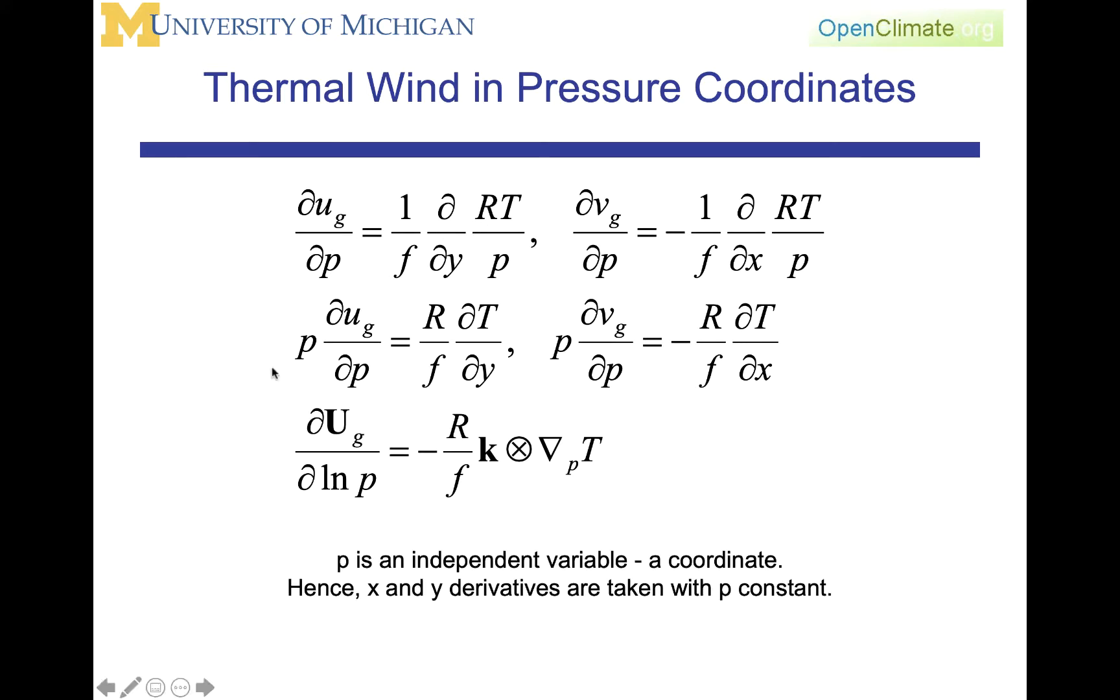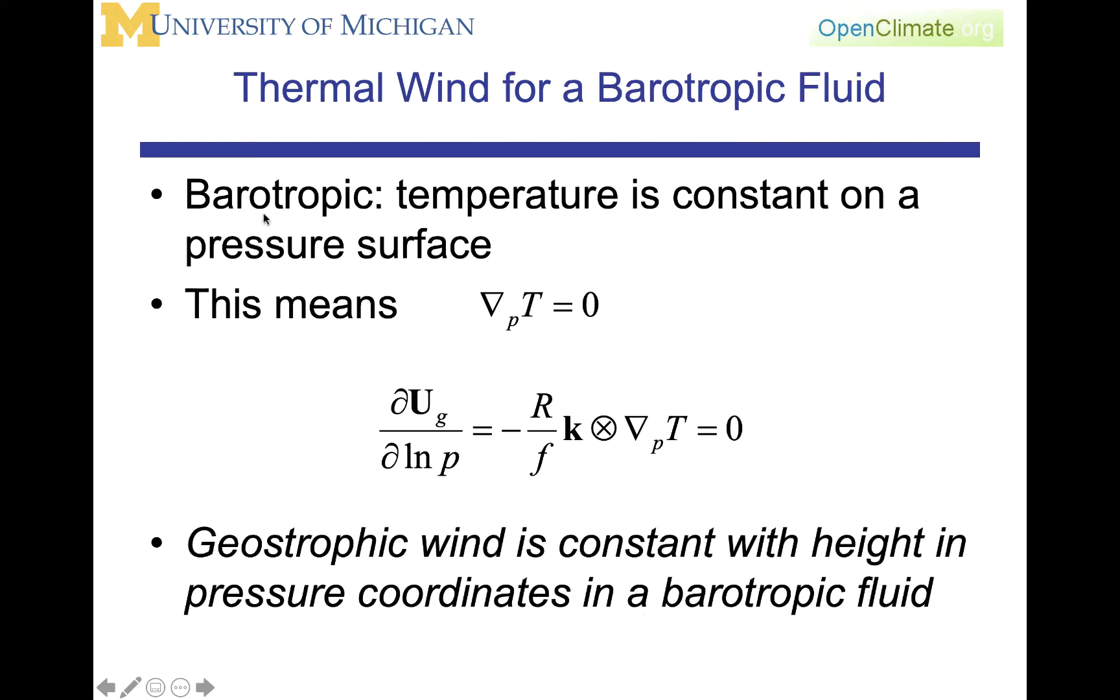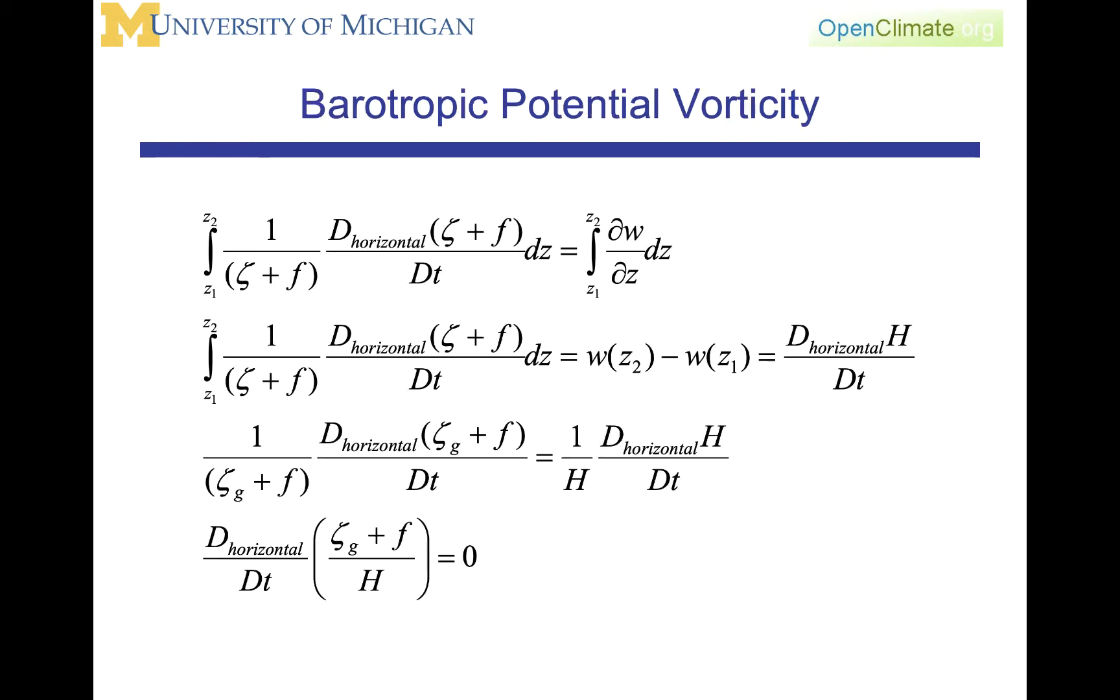We remember that p is an independent variable and a coordinate, hence x and y derivatives are taken with p being constant. We see that for a barotropic fluid where the temperature is constant on a pressure surface, that means by definition that del_p T is equal to zero, hence there is no vertical shear of the geostrophic wind, and the geostrophic wind is constant with height in pressure coordinates in a barotropic fluid.